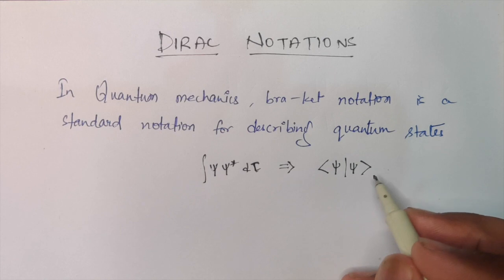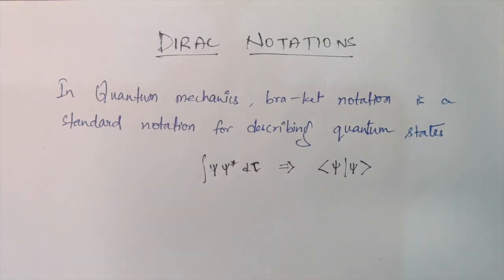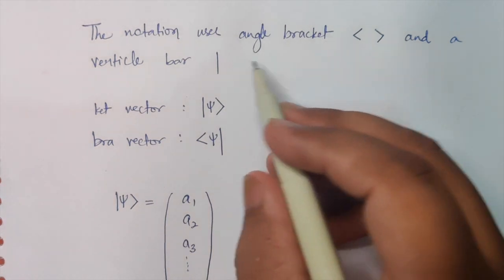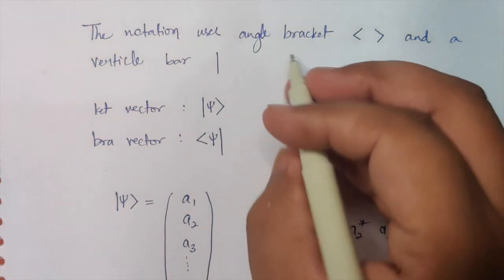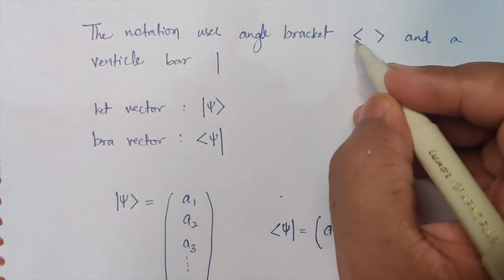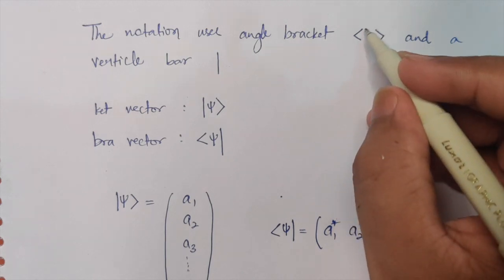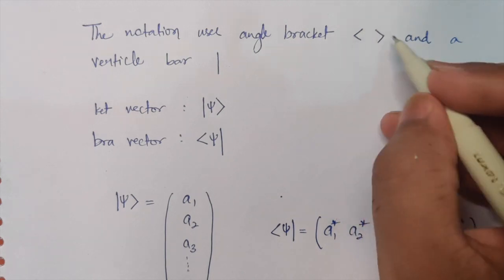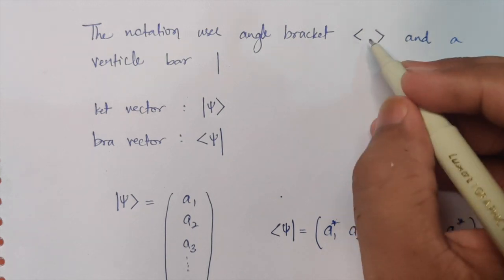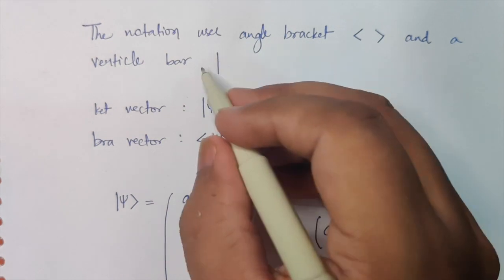Now, what is it actually and how do you identify it — I'll be explaining all these things in detail. This particular notation uses angle brackets. These are called angle brackets, the greater-than and less-than signs. And a vertical bar.